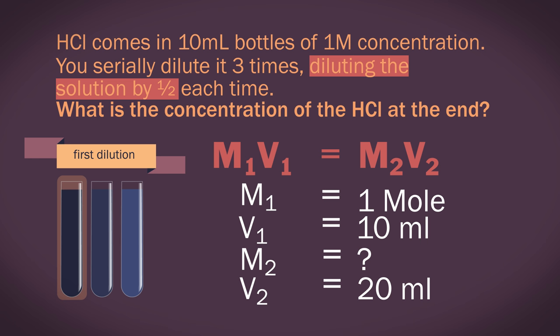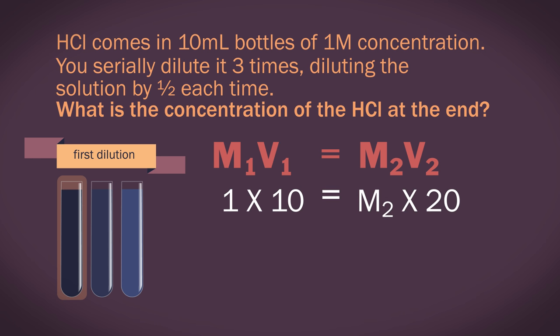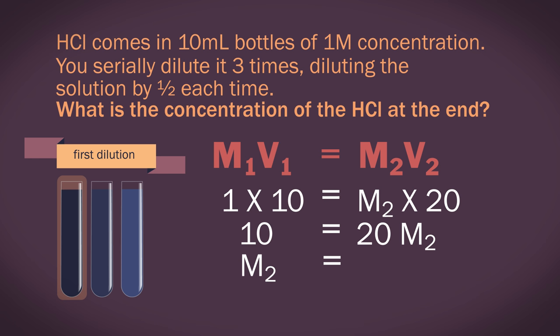Because we have already added 10 mL of water to dilute it by half. Substitute in these values and you get 1 times 10 equals M2 times 20. So 10 equals 20M2, and rearranging means M2 equals 0.5.